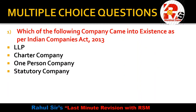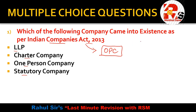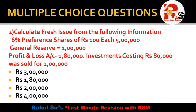The first question: which of the following company came into existence as per the Indian Companies Act 2013? In other words, which type of company is new under this Act? The options are LLP (Limited Liability Partnership), charter company, One Person Company, and statutory company. The right answer is One Person Company.